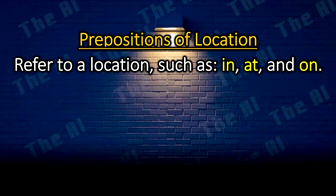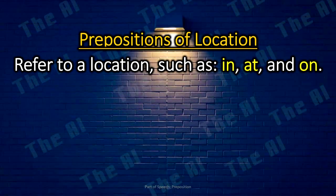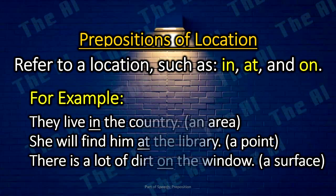Prepositions of location. The prepositions of location refer to a location, such as in, at, and on. For example: They live in the country. She will find him at the library. There is a lot of dirt on the window.